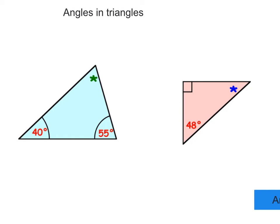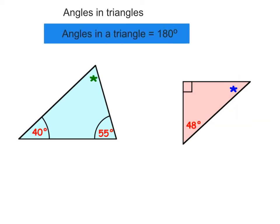In this video, we're going to look at angles in triangles. The first thing to remember is that angles in the triangle all add up to 180 degrees. So the three angles add up to 180 degrees.